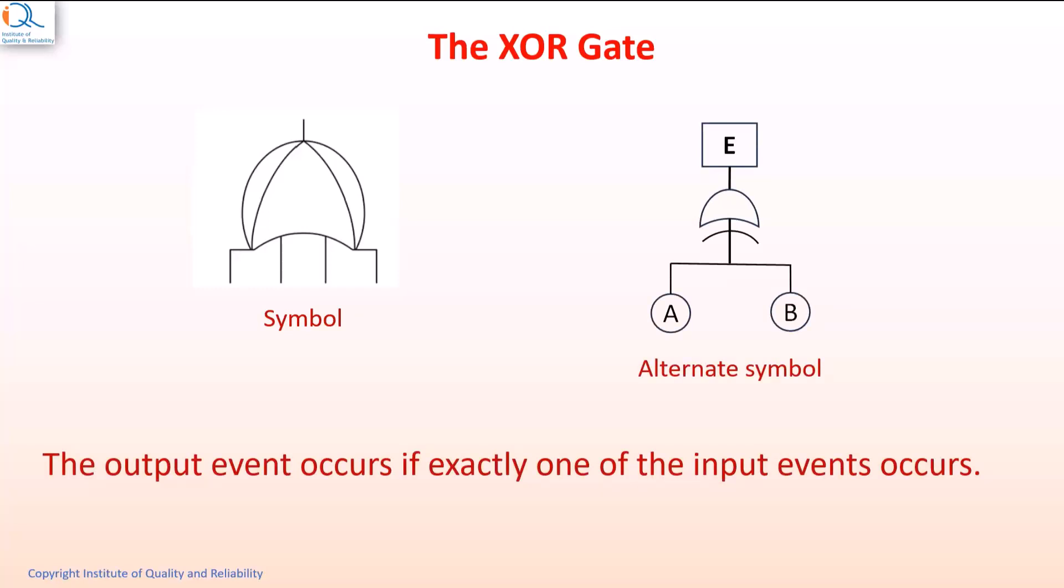In XOR gate, the output event occurs if exactly one of the input events occurs.